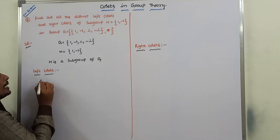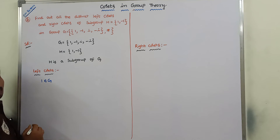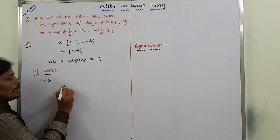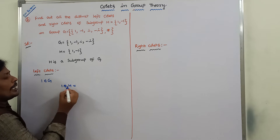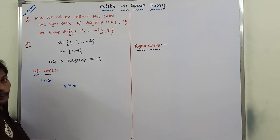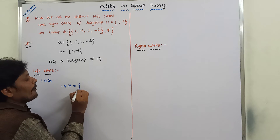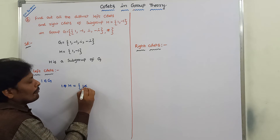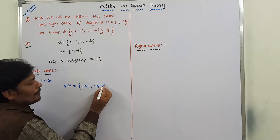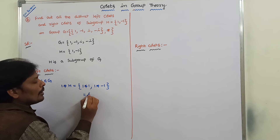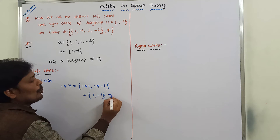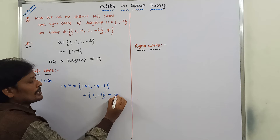First, I am taking element 1 of G. That means 1 belongs to G, and 1 is combined with H. So 1 · H — here 1 is on the left-hand side of H, forming the left coset. This left coset is defined as: 1 × 1, 1 × (−1), giving us 1 and −1. So 1·H = {1, −1} = H.